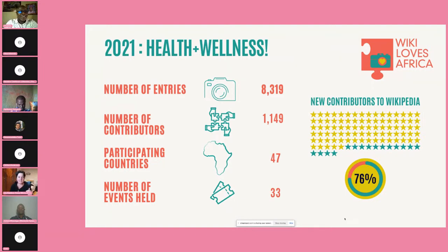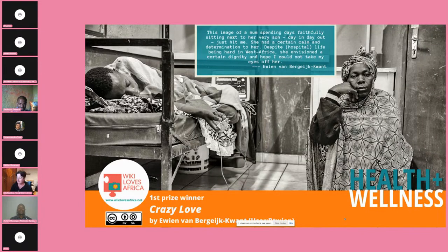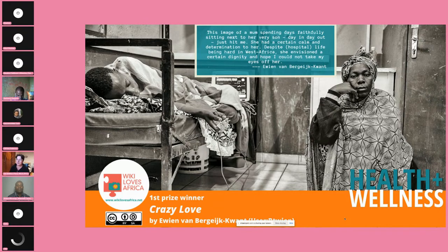Between 75 and 80% of people who contribute to Wiki Loves Africa are entirely new to the Wikimedia movement, which is a very high contribution rate. The numbers are coming down every year, meaning more people are re-contributing. This year, Erwin van Bergeijk won with an amazing photograph of a woman waiting with her son at the hospital — sitting vigil day in, day out. The photographer said this image of a mom spending time faithfully sitting next to her son just hit him. She had a certain calm and determination, and despite hospital life being hard in West Africa, she conveyed a certain dignity and hope.